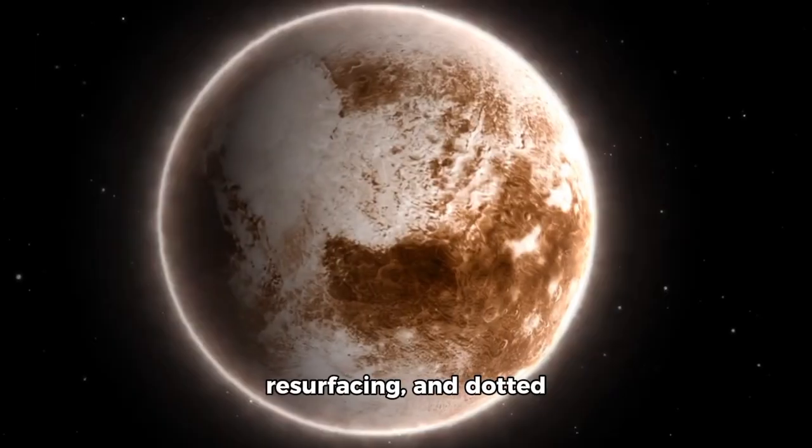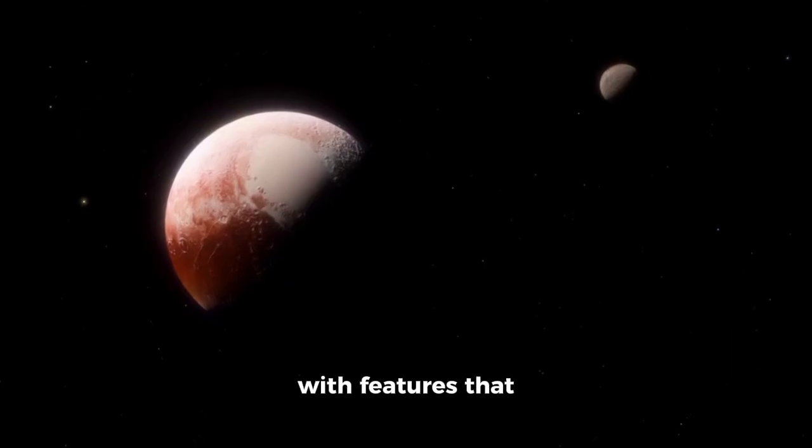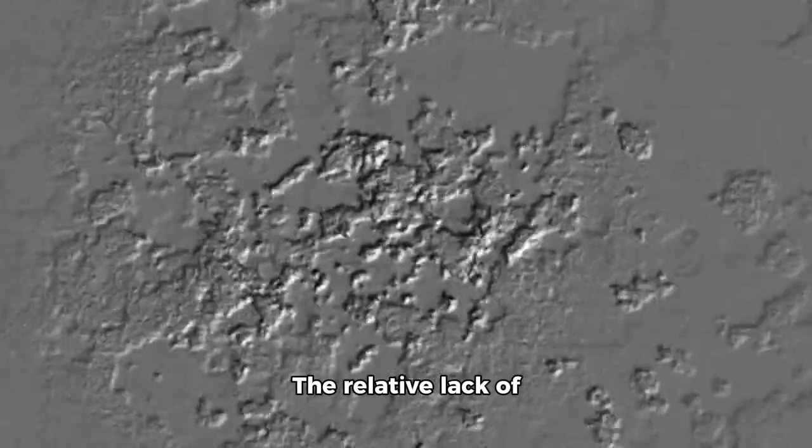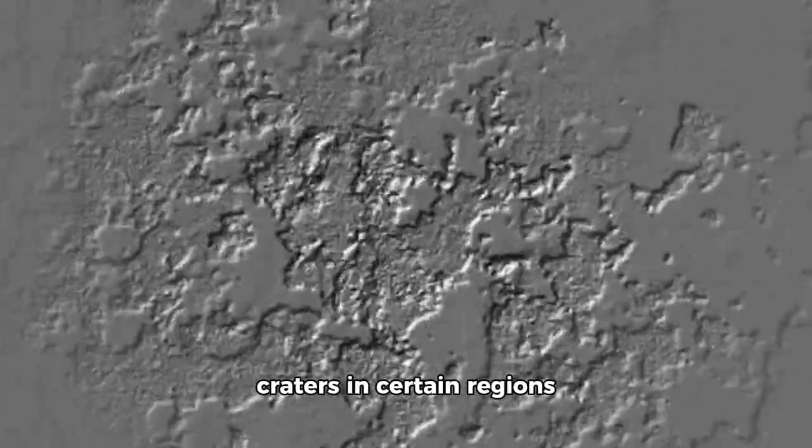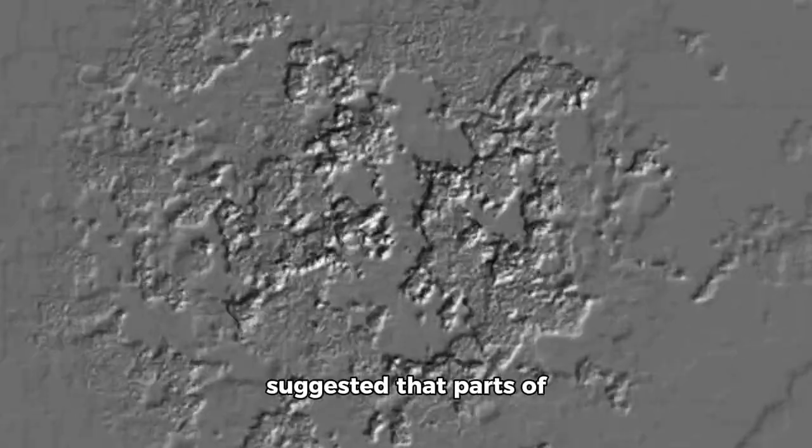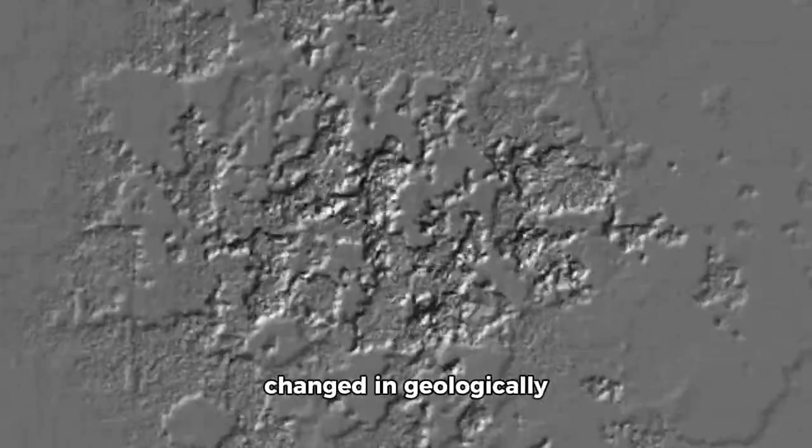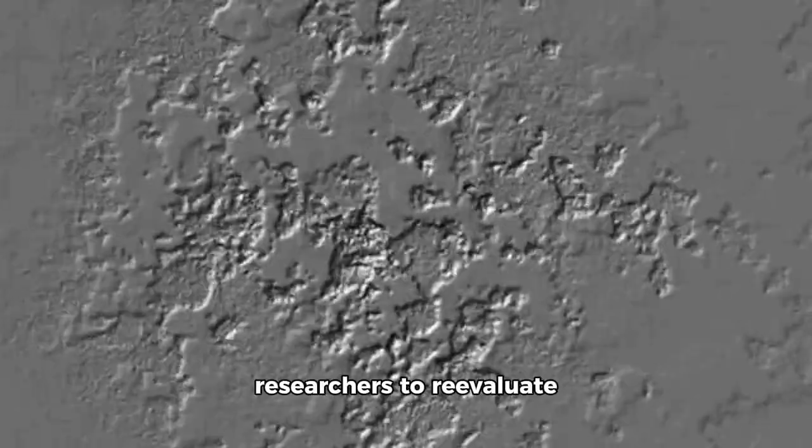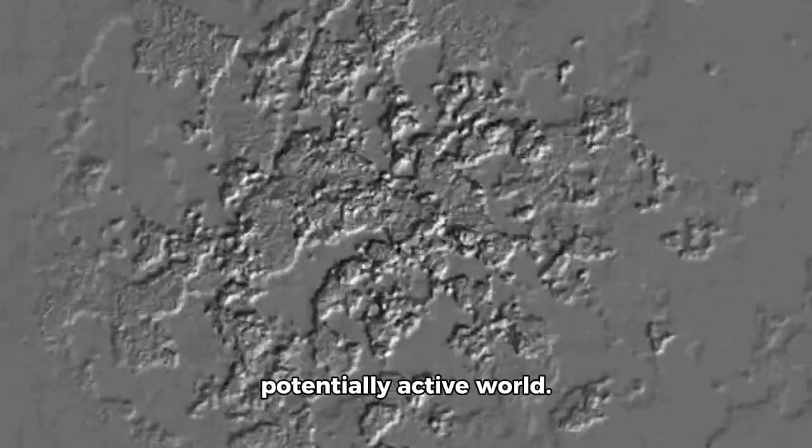Dotted with features that hinted at recent or even ongoing activity, the relative lack of craters in certain regions suggested that parts of Pluto's surface have changed in geologically recent times, forcing researchers to re-evaluate the dwarf planet as a potentially active world.